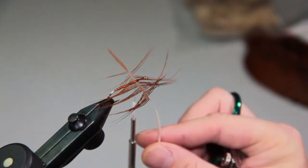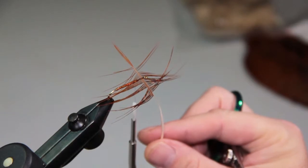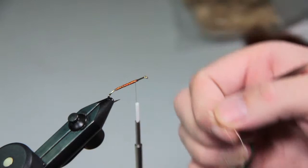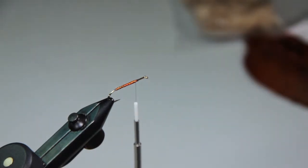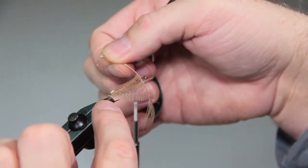The first will be a pheasant rump. And that's going to be a quarter to three inch longer than the hook bend. And then our secondary hackle is going to be a tan dyed wood duck flank. And that's going to be just right around the hook bend.